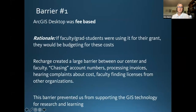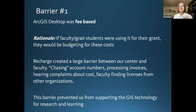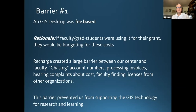Barrier number one: desktop software was fee-based. The rationale was that if they're using it for grants, they should pay for it. But it cost about triple to process the recharges versus just giving it out for free. It also created a big barrier between our center and faculty — chasing account numbers, processing invoices, faculty complaining about being charged $100, leading to bootleg licenses from other organizations. It really prevented us from supporting the technology for research and learning.